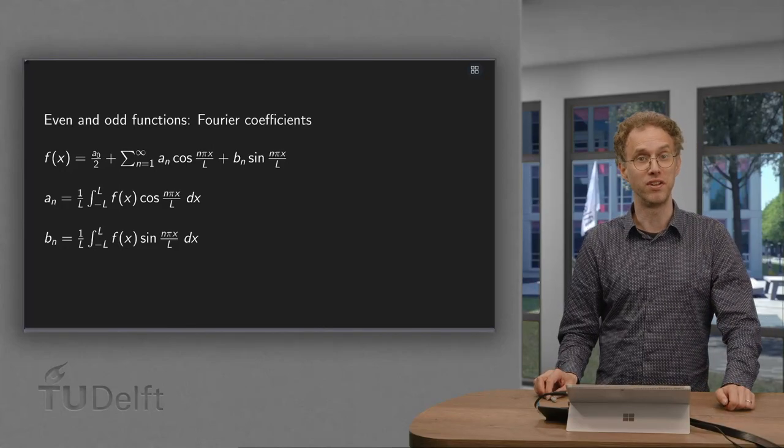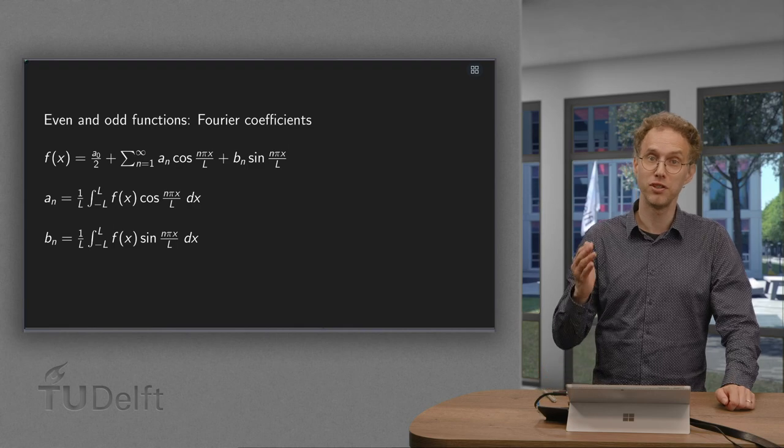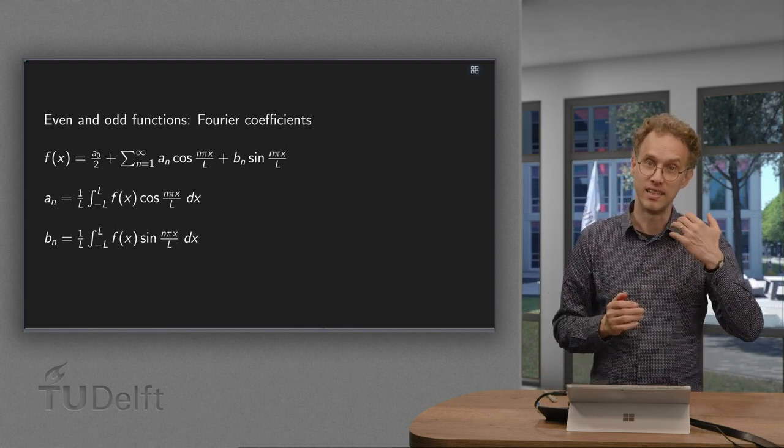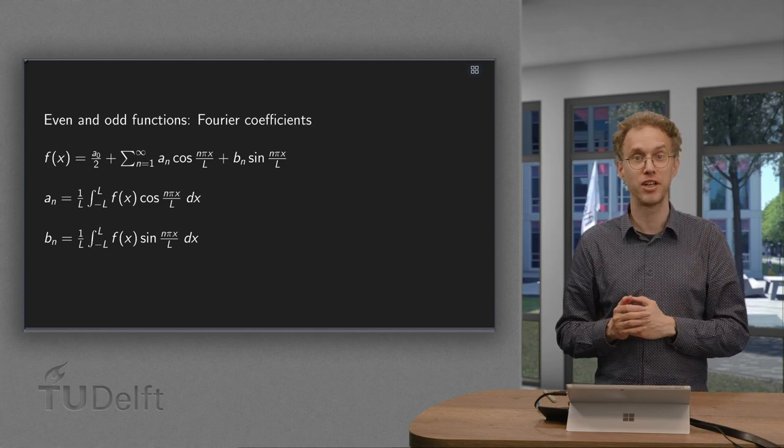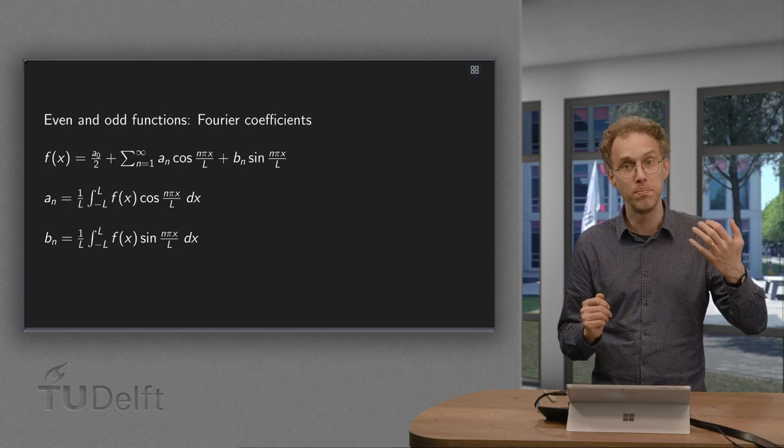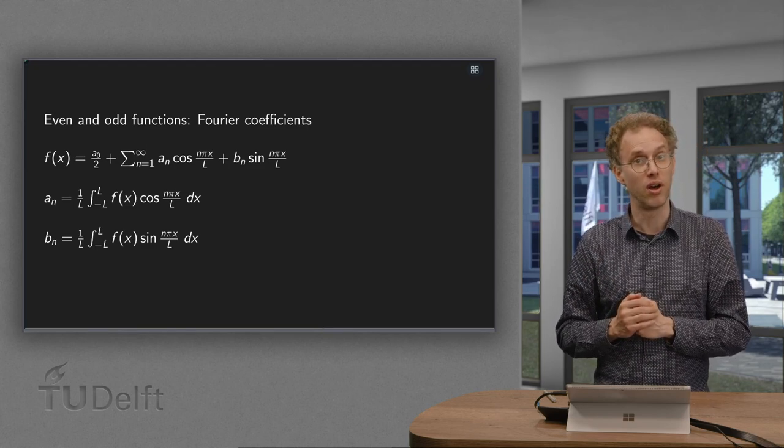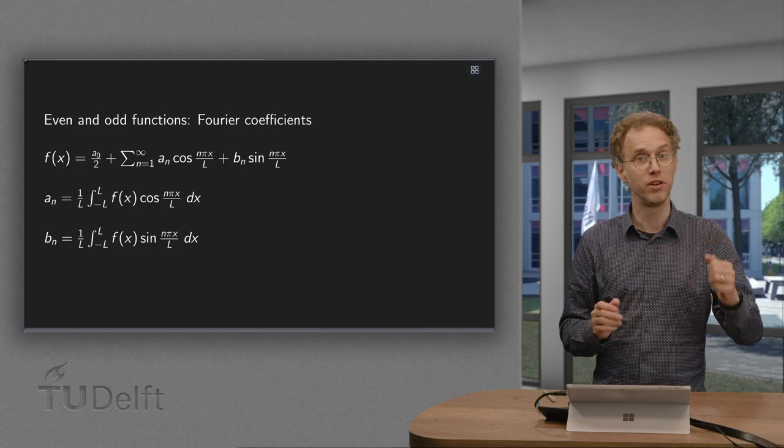Computation of a Fourier series of a function simplifies a bit if a function f of x is either even or odd. In that case either the a_n are 0 if f is odd or the b_n are 0 if f is even. So this saves us half of the work. But why is this?